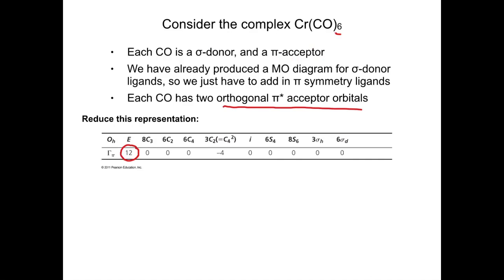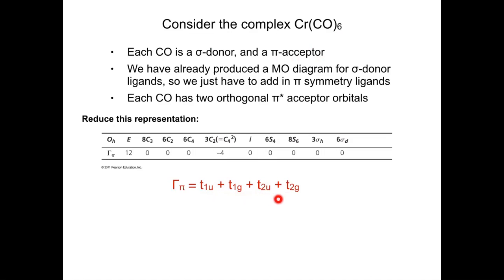The immediate thing everyone should recognize when they see this is the formation of the T2g ligand group orbital. If you remember from our molecular orbital diagram for sigma donor orbitals, the T2g up to this point has been a non-bonding orbital, and immediately we're going to see that is no longer true.